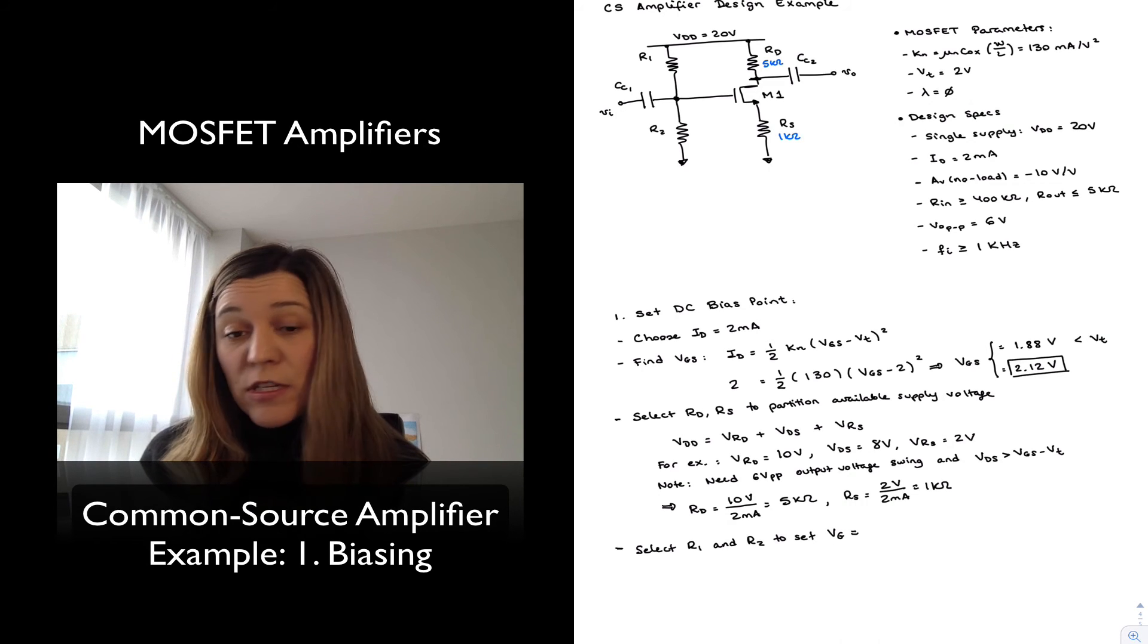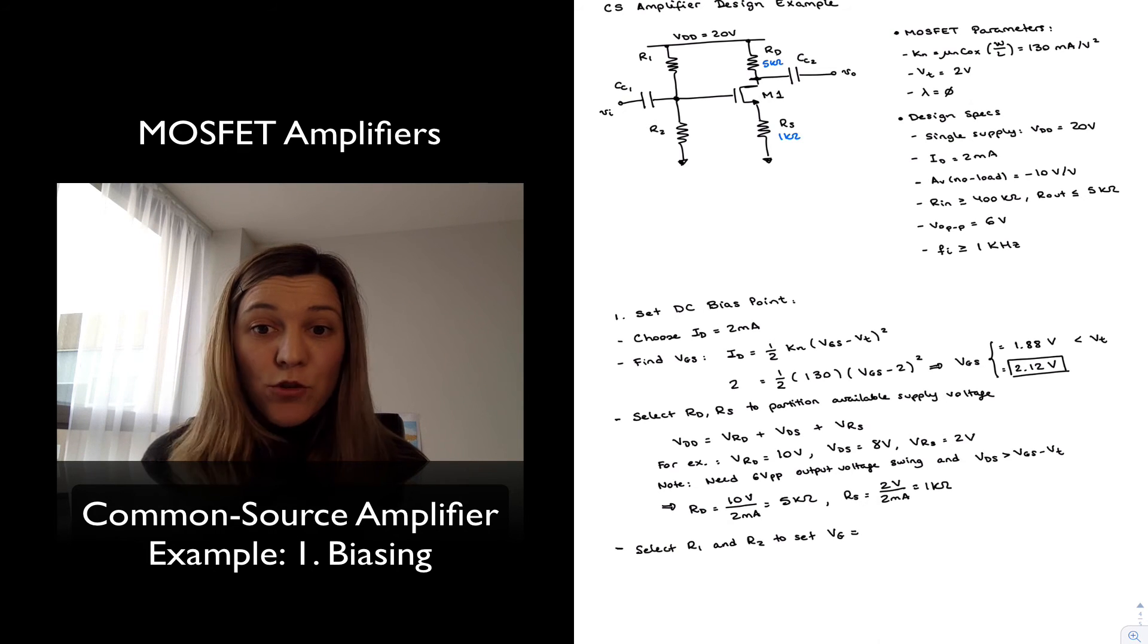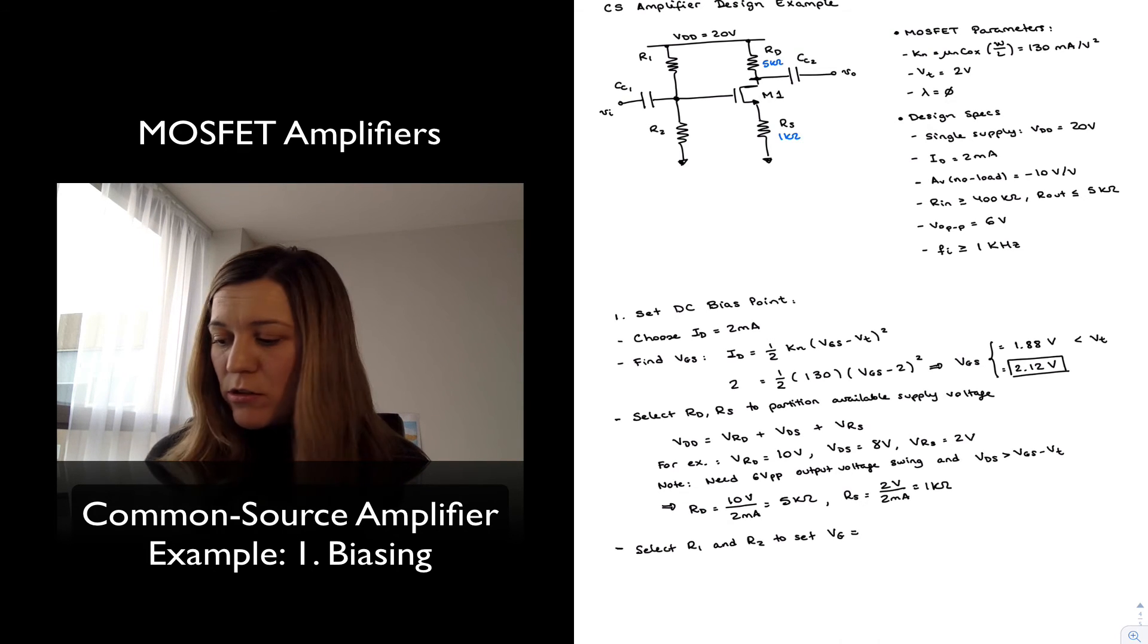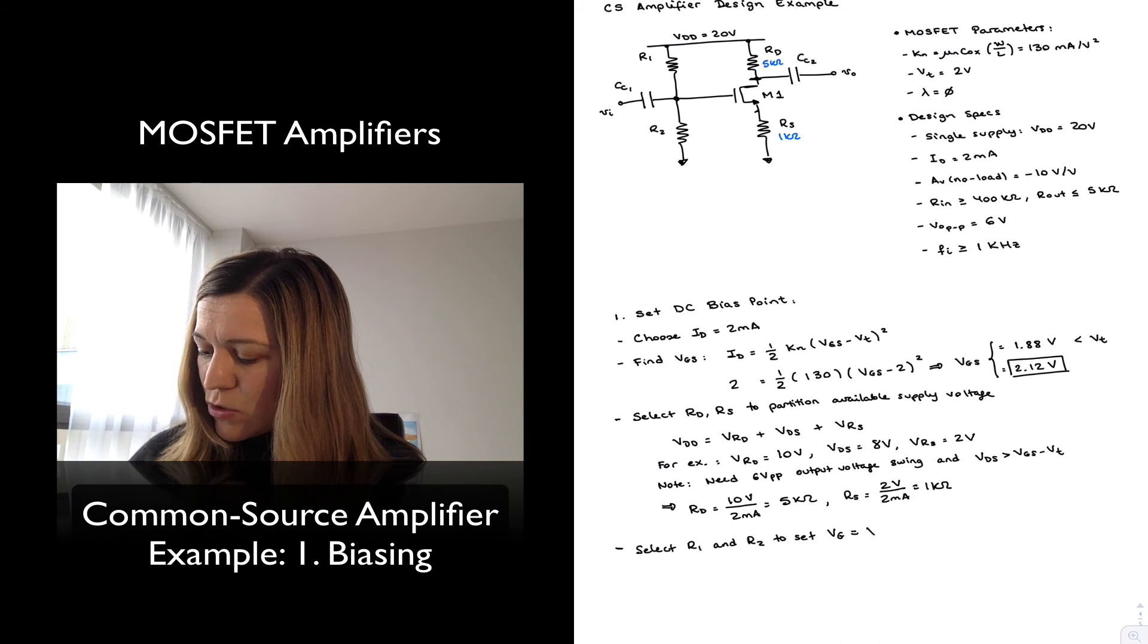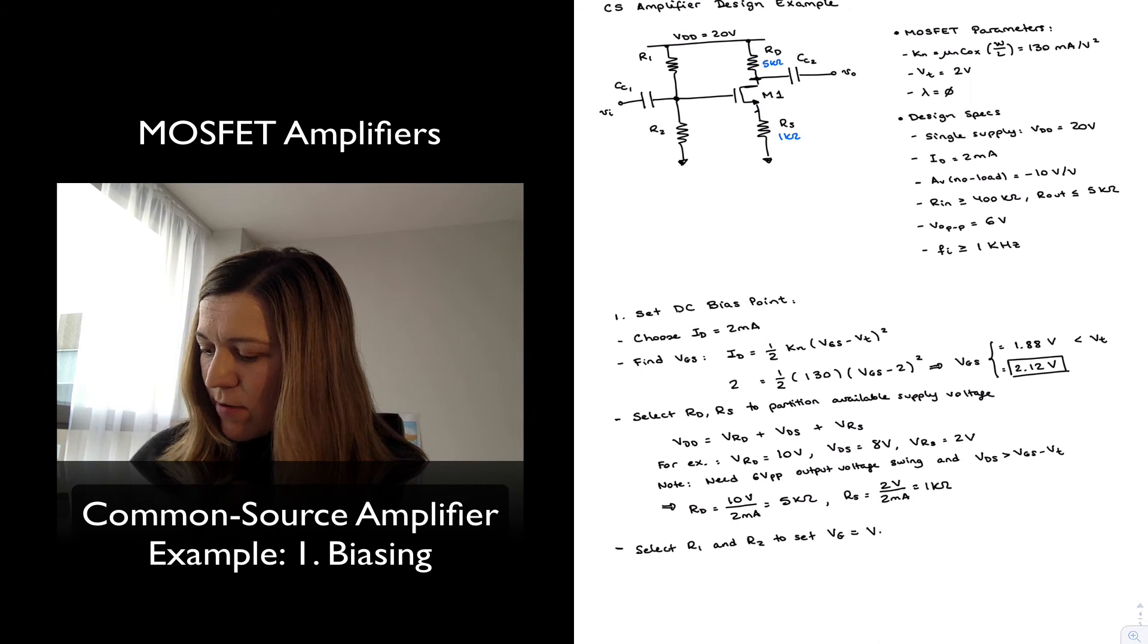So I'm selecting R1 and R2 to set VG, and VG needs to be equal to—remember that we need to have a certain VGS of 2.12 volts in order to make the current equal to 2 milliamps. I want my gate voltage to be equal to my source voltage plus that VGS voltage.